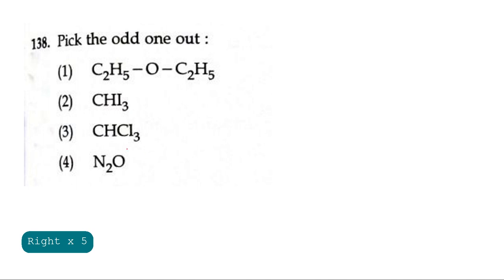Question 138: Pick the odd one out among these. The first one shows ethoxyethane which is an ether and an organic compound. CHI3 is called triiodomethane, also an organic compound. It is an iodine substituted organic compound. The third one is trichloromethane. The fourth one is nitrous oxide. The first three are organic and the last one is a mineral compound. Nitrous oxide, also called laughing gas, is the odd one out. The correct option is option 4.